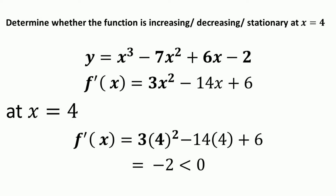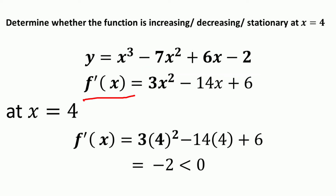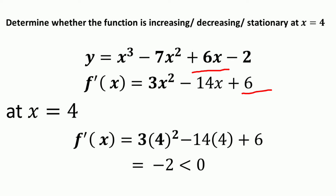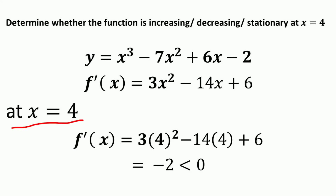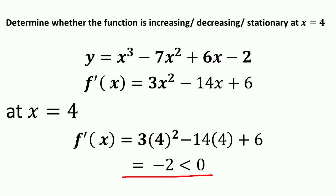Consider another example: determine whether the function is increasing, decreasing, or stationary at x equal to 4. The function y equals x cubed minus 7x squared plus 6x minus 2. Differentiating with respect to x: f prime of x equals 3x squared minus 14x plus 6. Substituting x equal to 4: f prime of 4 equals 3 times 16 minus 14 times 4 plus 6 equals negative 2, which is less than zero. So we can say that this function is a decreasing function at x equal to 4.